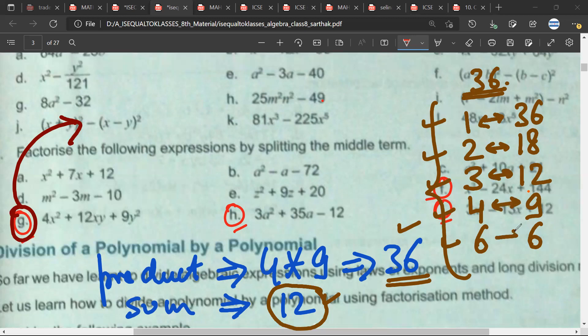So for example, now if I want to check, the product of the two numbers should be 36. So in this case, 1 into 36 is 36, so the first condition is satisfied. But does it satisfy the second condition? Is the sum of these two numbers 12, Mr. Sartak? Have you understood the logic? Yes.